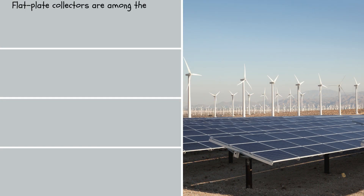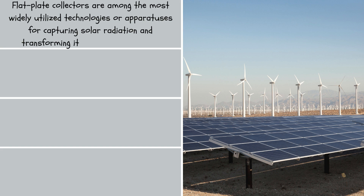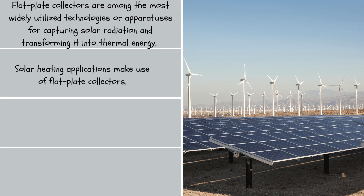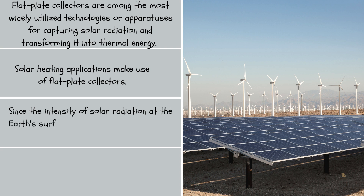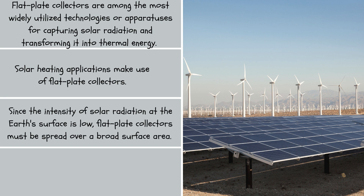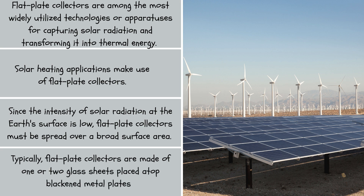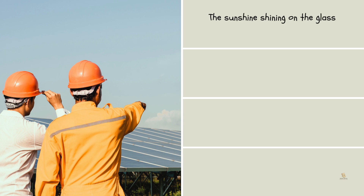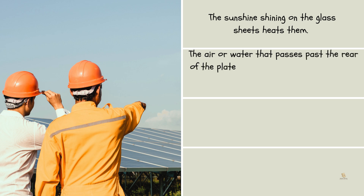Flat plate collectors are among the most widely utilized technologies for capturing solar radiation and transforming it into thermal energy. Since the intensity of solar radiation at the Earth's surface is low, flat plate collectors must be spread over a broad surface area. Typically, flat plate collectors are made of one or two glass sheets placed atop blackened metal plates. The sunshine shining on the glass sheets heats them, and the air or water that passes past the rear of the plate will then absorb that heat.